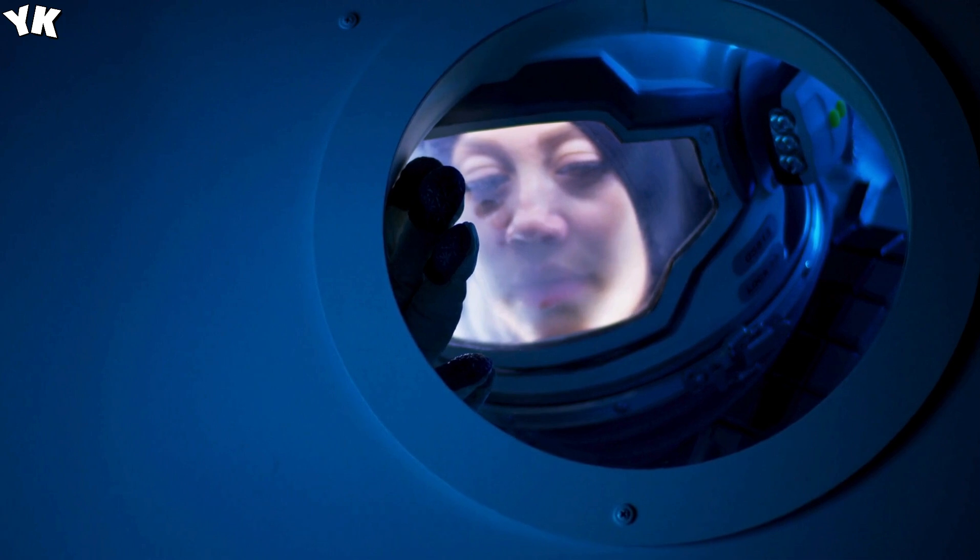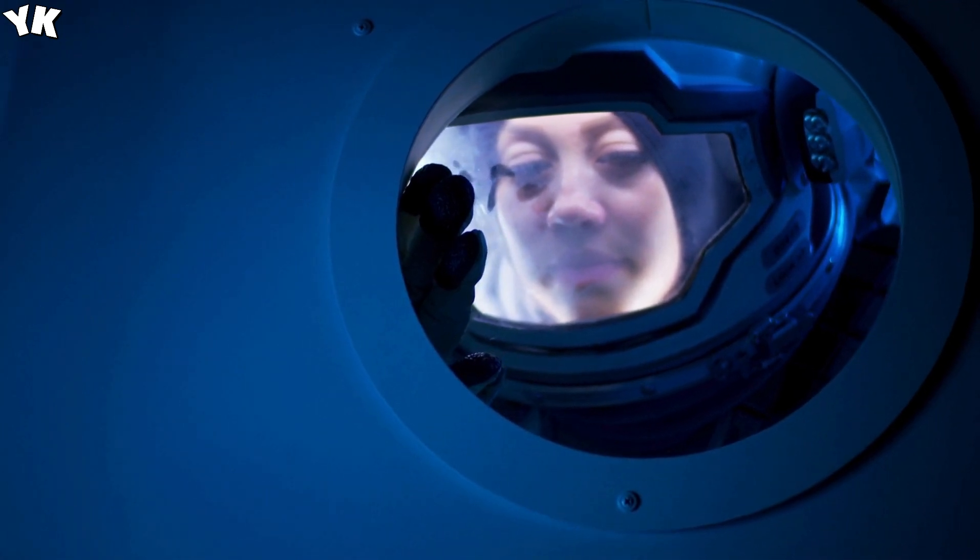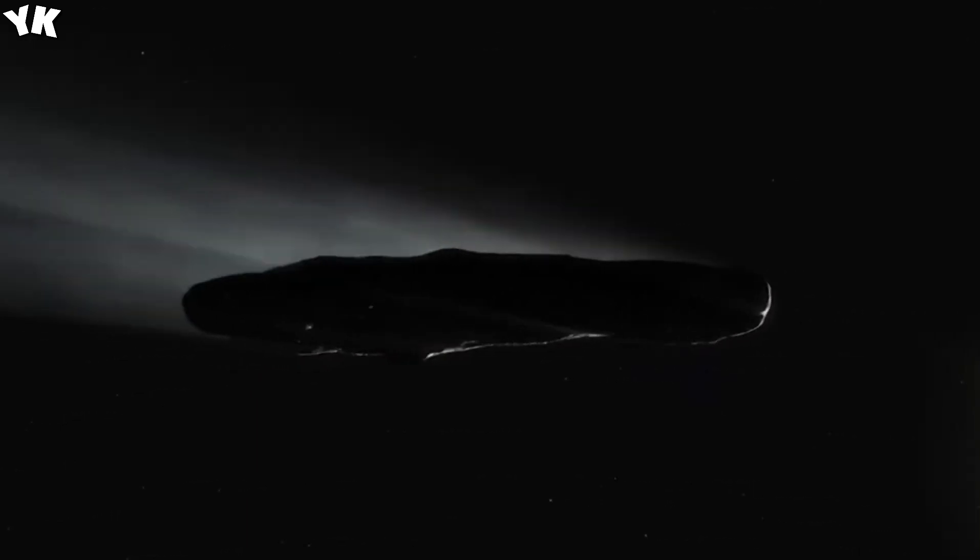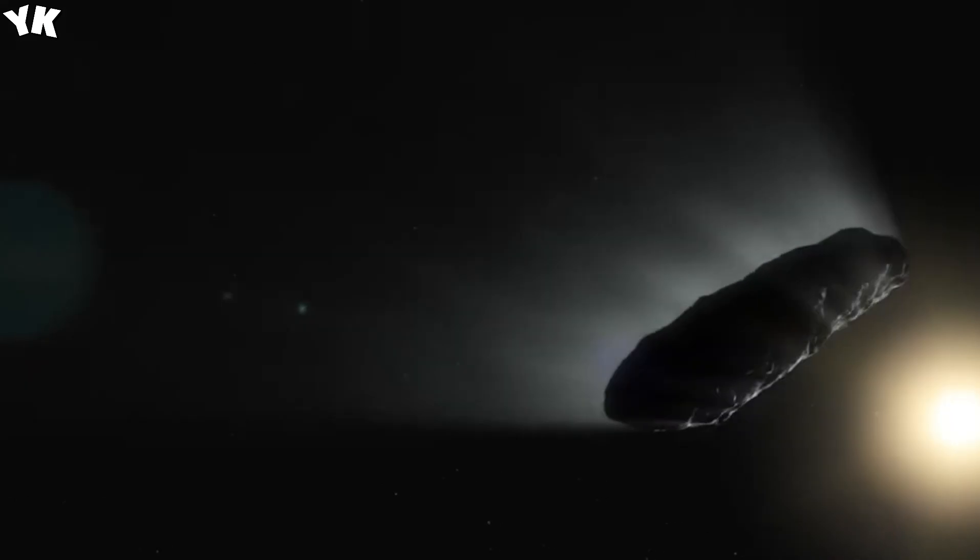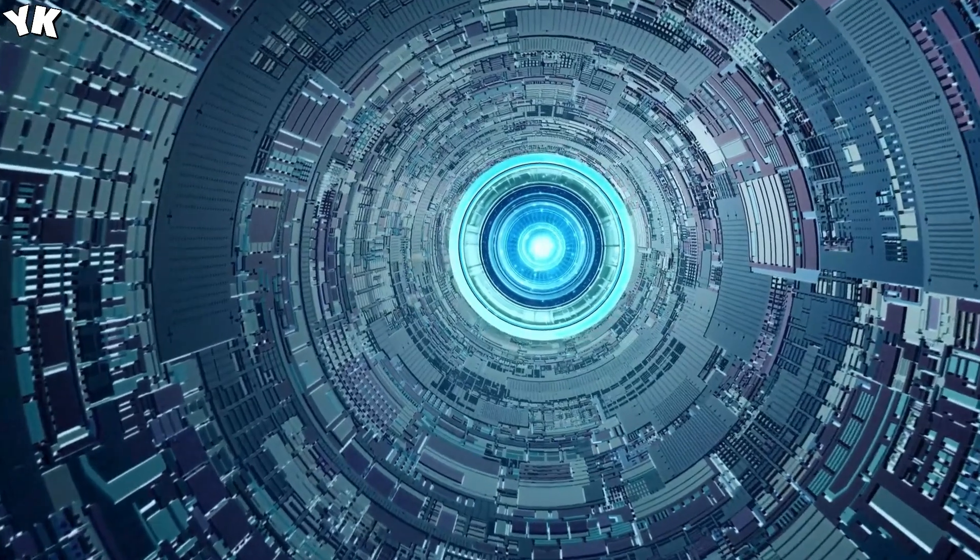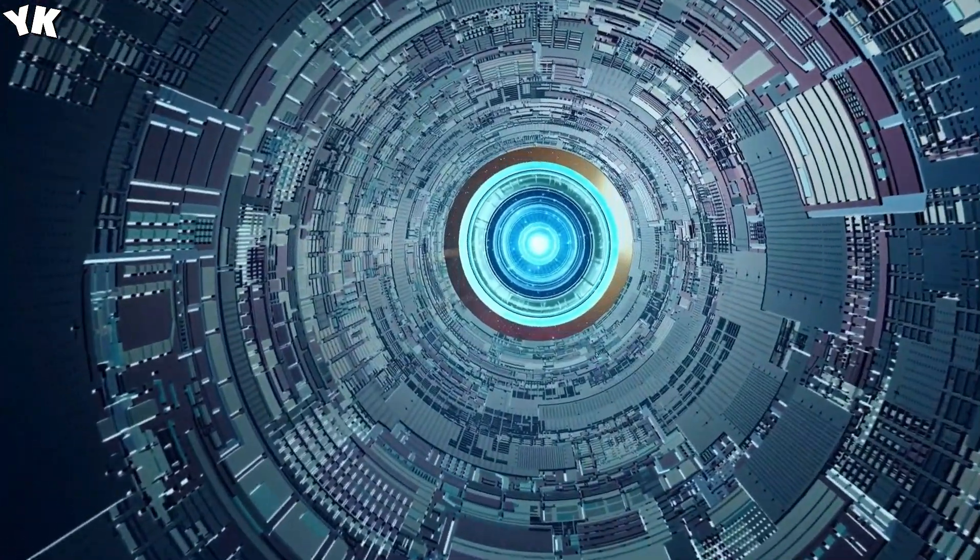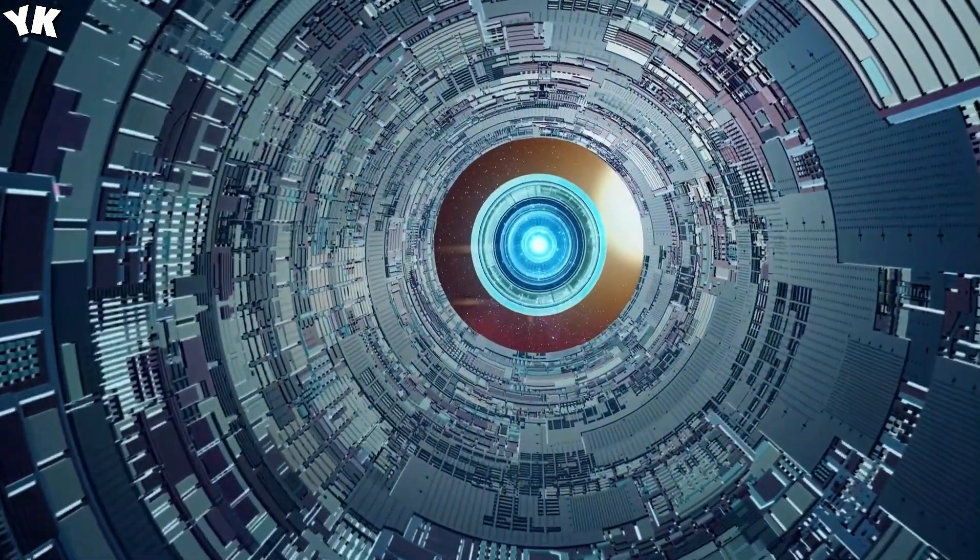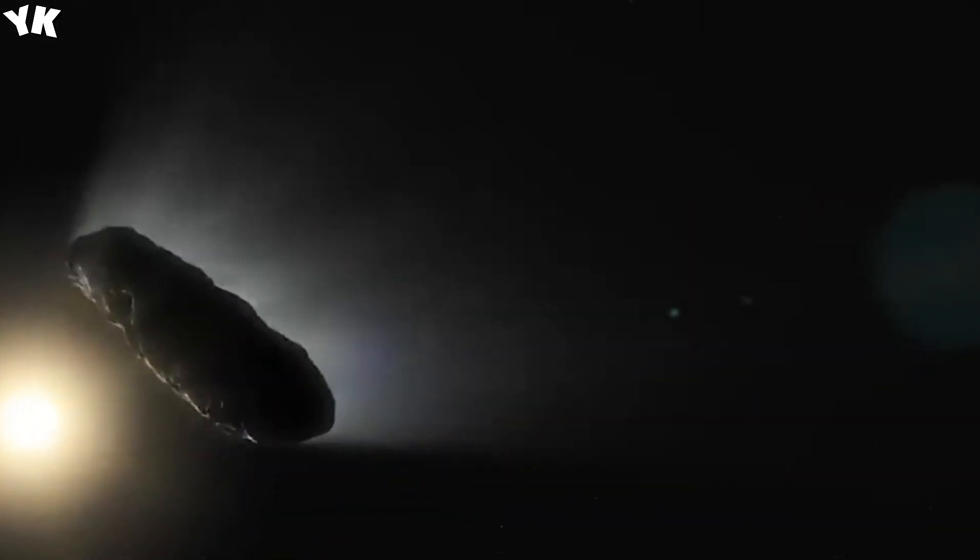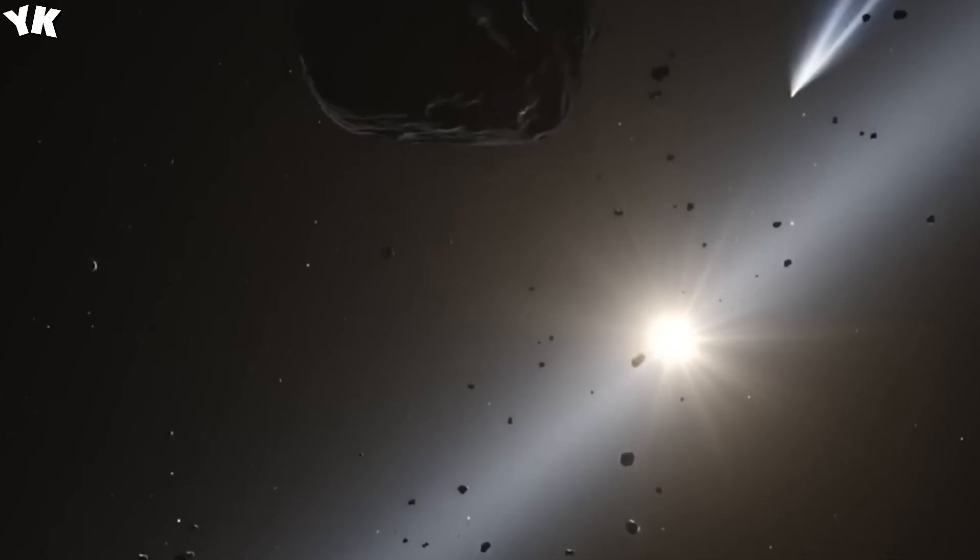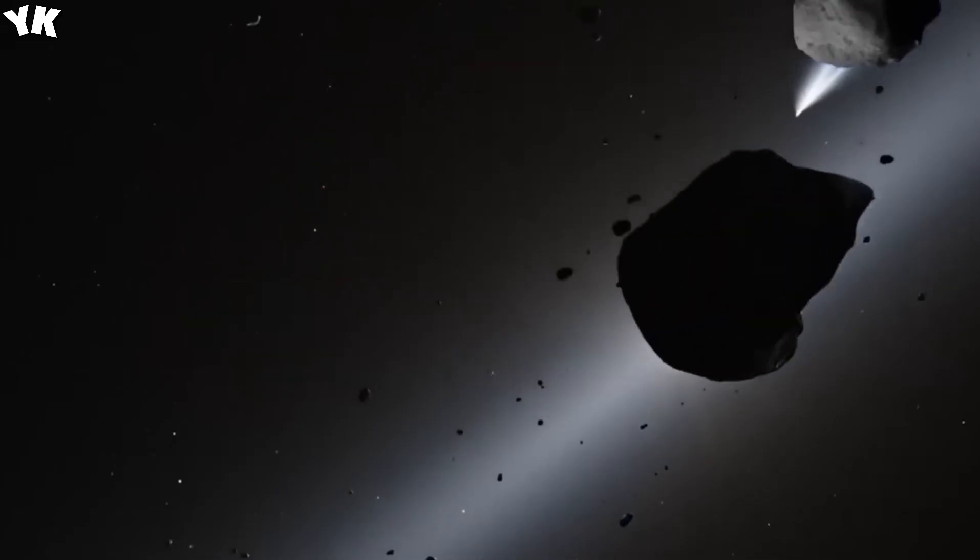What's remarkable is that Oumuamua's tumbling and spinning didn't lead to its destruction, suggesting it was likely constructed of a more durable material than the icy composition of most comets. The dark red color of Oumuamua is also notable, reminiscent of several moons in the outer solar system believed to have been darkened by space radiation or possibly iron content. All these characteristics combine to make Oumuamua truly unique.